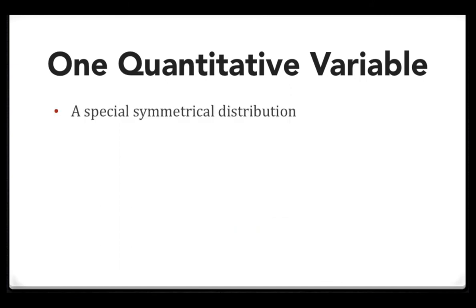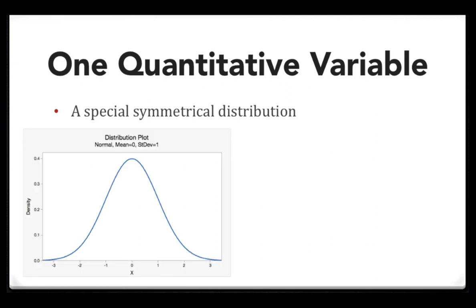This week, you'll be introduced to a special symmetrical distribution. This is a normal distribution. More specifically, this is a z distribution. A z distribution is a normal distribution with a mean of 0 and a standard deviation of 1.